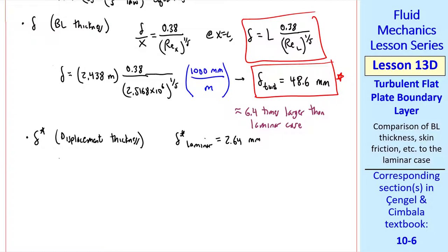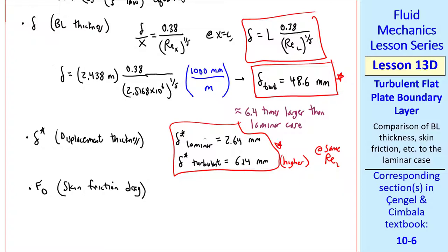I'll also compare displacement thickness. For the laminar case, we had 2.64 millimeters. For the turbulent case, we get 6.14 millimeters, which again is higher. Note that these are at the same Reynolds number.